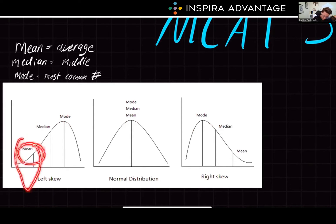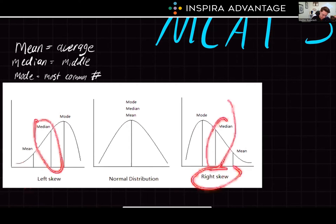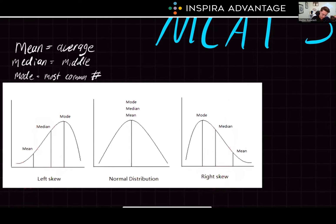See how low the average is on a left and right skew? That doesn't actually tell us much about the data — it tells us about where the outliers are. So when we have big skews, we usually want to evaluate the median, not the mean.